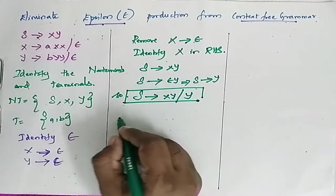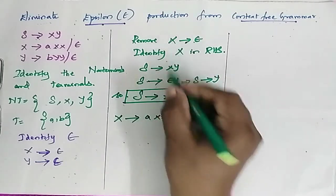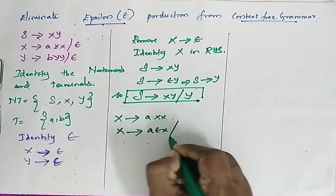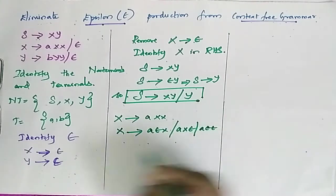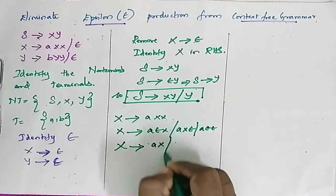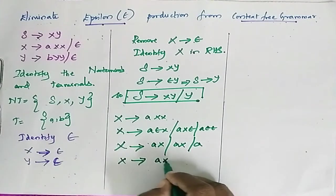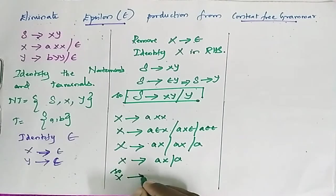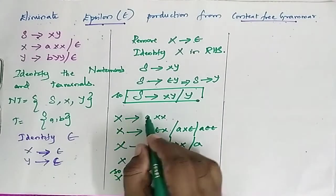Also, X appears in X determines AX. When substituting epsilon for X, X tends to A epsilon, giving X determines A. So X now becomes AX slash A. Combining, X becomes AX slash A.